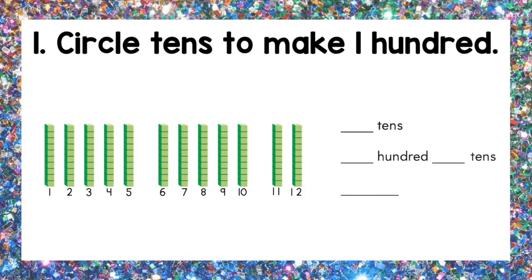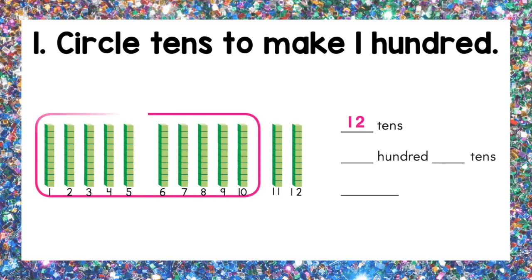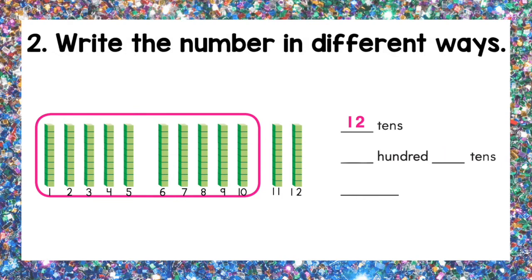Circle tens to make one hundred. Before we do that, let's write how many tens there are: twelve. Out of those twelve tens, we can circle ten of them. Now let's write the number in different ways. One hundred and two tens makes one hundred twenty.